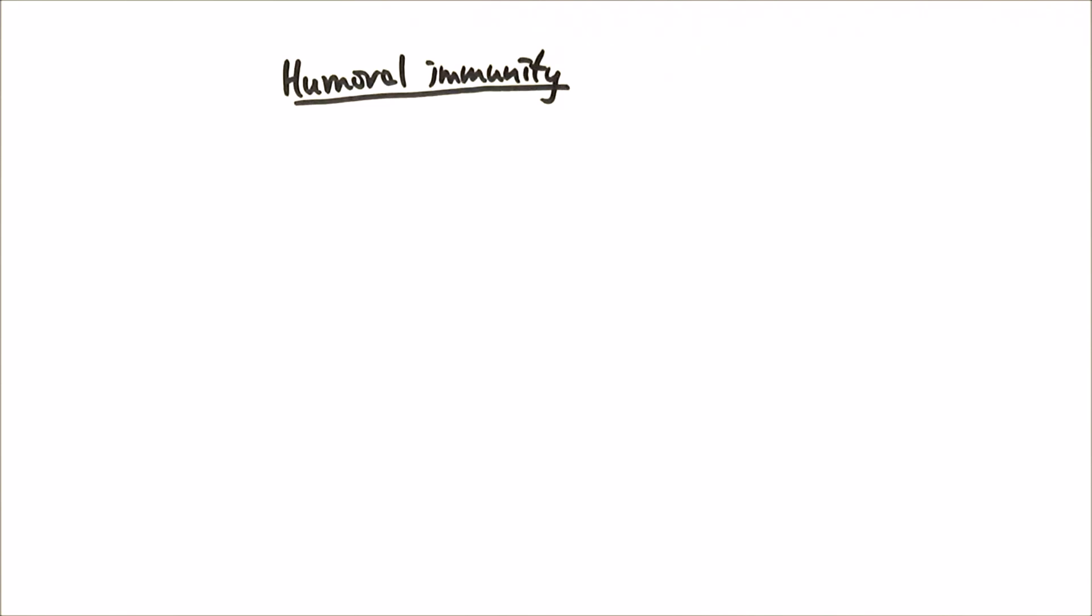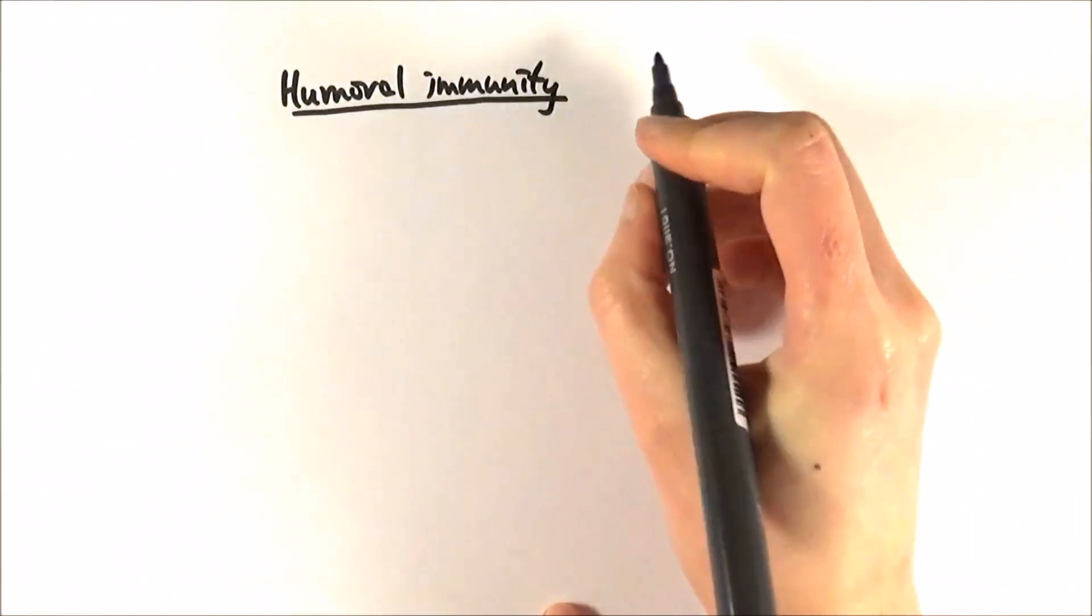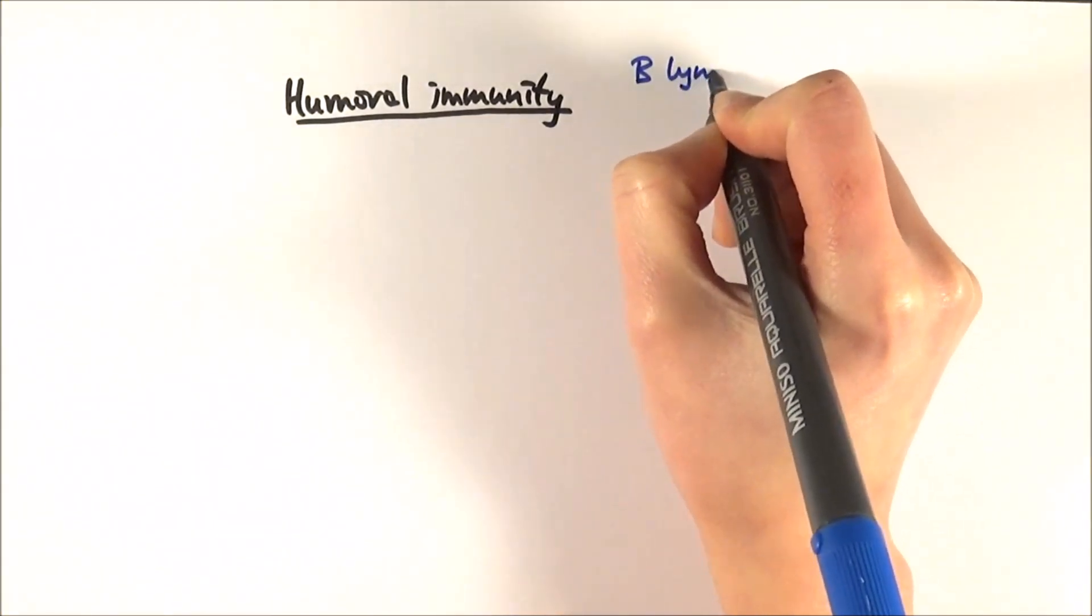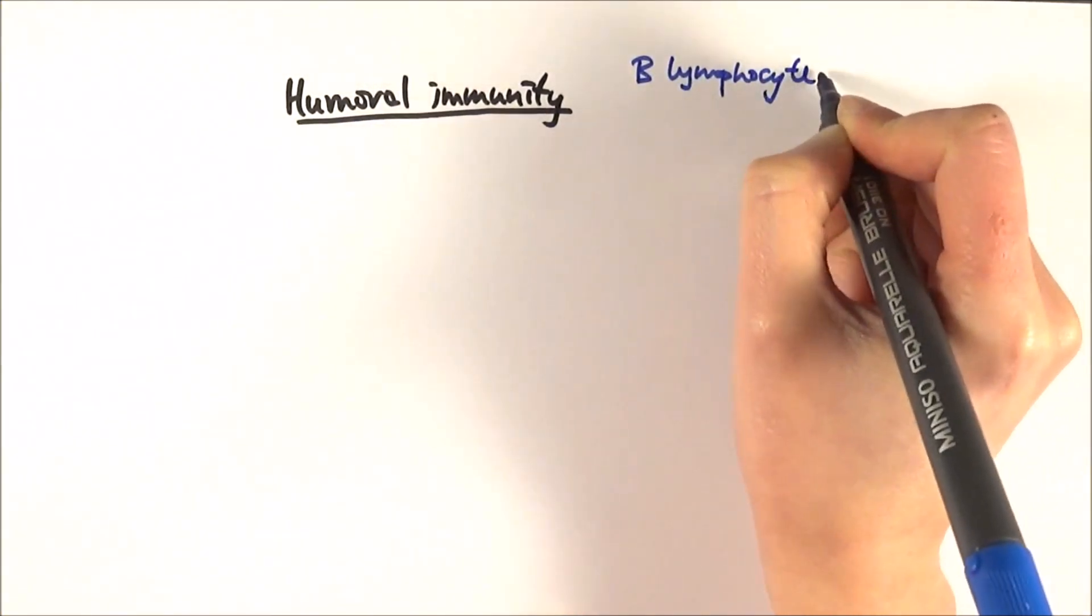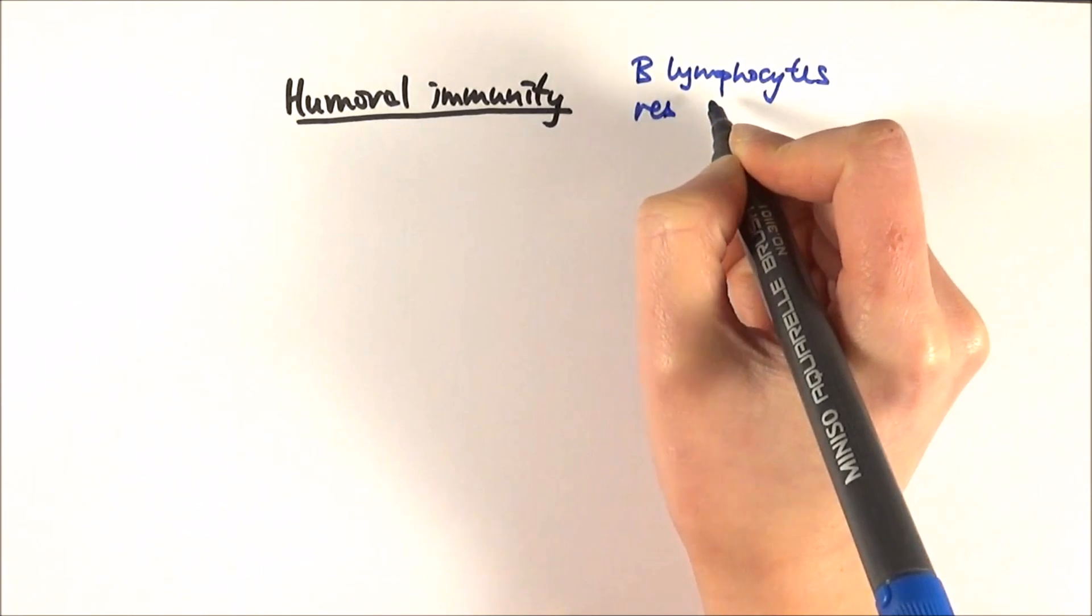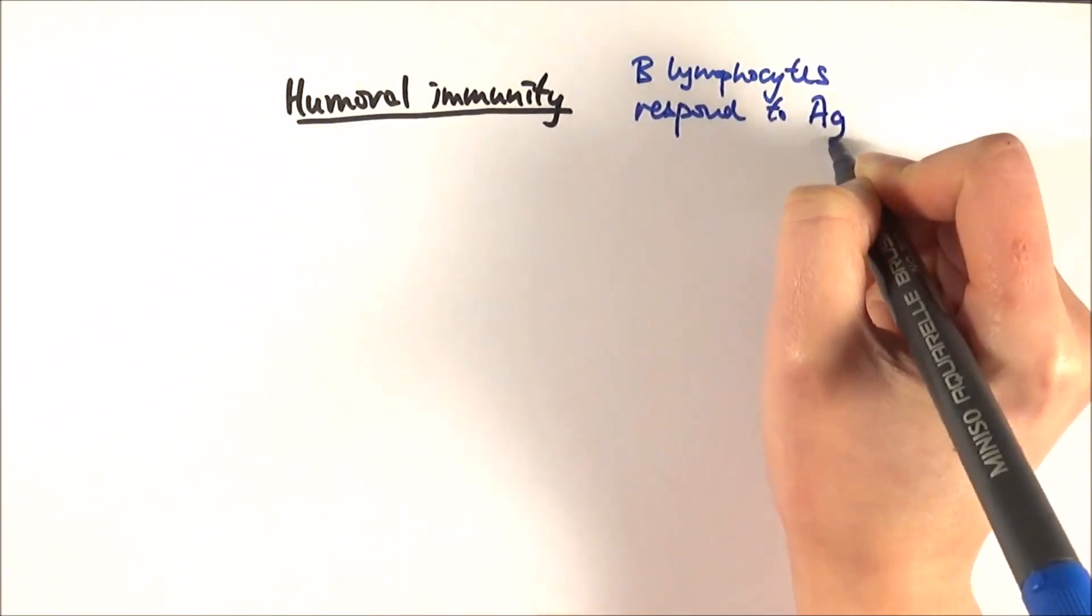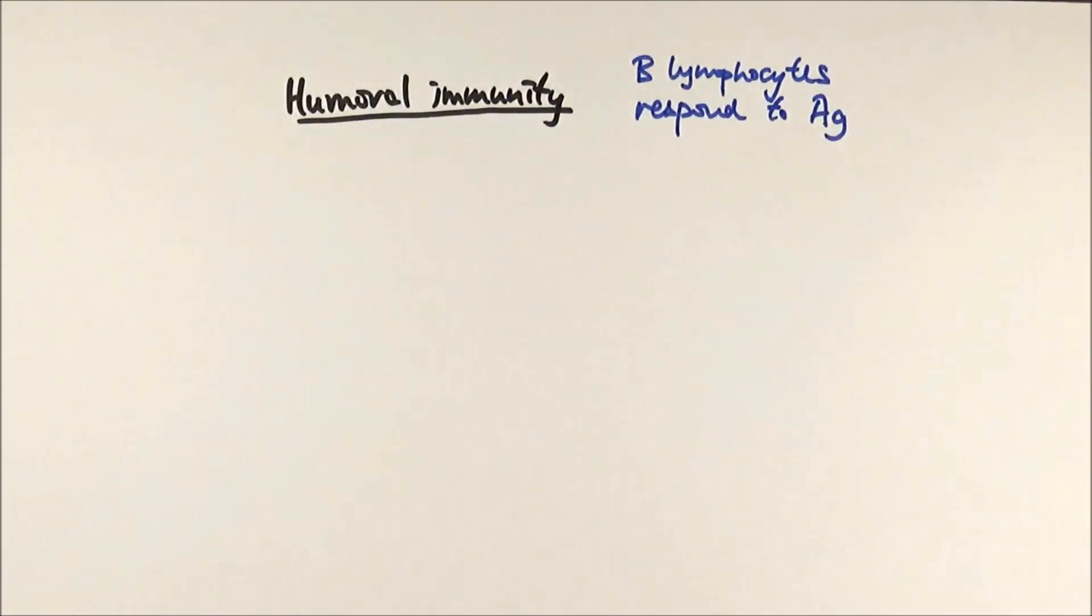The difference between humoral and cell mediated immunity is that this time we mainly have B lymphocytes involved. They can respond to the antigen on cell surface and it seems pretty much the same thing as what T lymphocytes do, but there is a major difference.